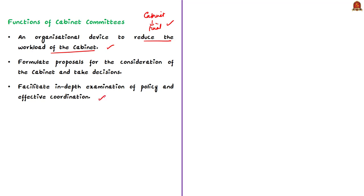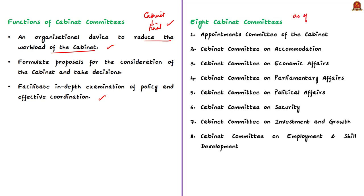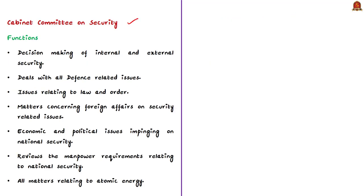Cabinet committees are devised to reduce the workload of the cabinet and facilitate in-depth examination of government policies and their effective coordination. As of 2019, there are eight cabinet committees — the number varies from time to time. Out of these eight, the last two — the Cabinet Committee on Investment and Growth, and the Cabinet Committee on Employment and Skill Development — have been newly set up. Now let us see about the Cabinet Committee on Security, which plays a very important role in the decision-making of both internal and external security of India.